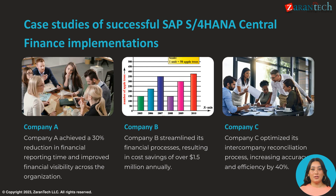Here are some examples of successful SAP S/4HANA Central Finance implementations. One company achieved 30% faster reporting and improved visibility. Company B streamlined processes, saving over $1.5 million annually. Companies have also seen increased intercompany reconciliation accuracy and efficiency by 40%. The solution can deliver significant time and cost savings if implemented effectively.